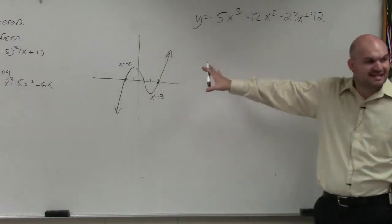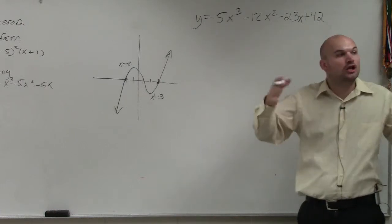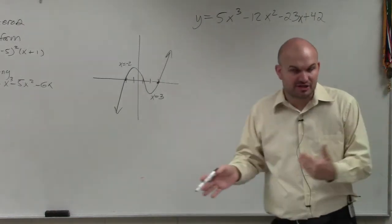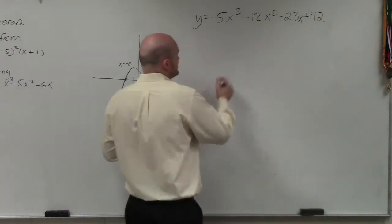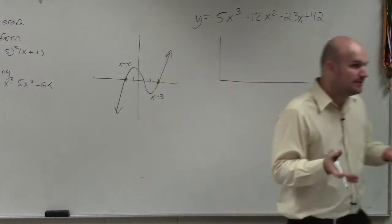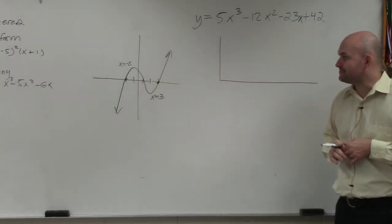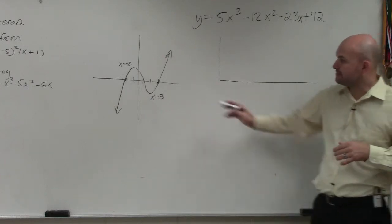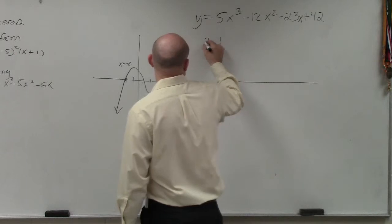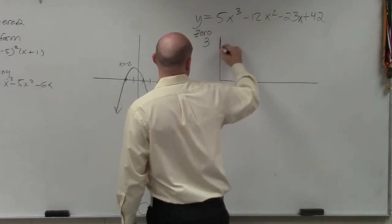If you are given the zeros or the x-intercepts, you can find all of the zeros and x-intercepts by using synthetic division. What you're going to basically do, rather than using long division, which works, but it's much easier to use synthetic division. So what I'm simply going to do is choose one of my zeros and place the zero right here. Those are going to be your zeros, that's going to be your zero.